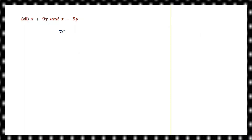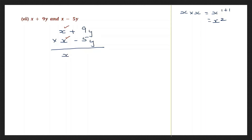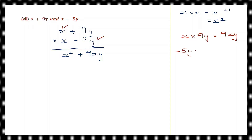Now let's multiply x plus 9y into x minus 5y. First let's take x into x: x into x will be x to the power of 1 plus 1, which is x squared. Let's write x squared here. Now let's multiply x into 9y: x into 9y will be 9xy, so let's write plus 9xy. Now let's multiply minus 5y and x: that's minus 5y into x, which is minus 5 into 1 into y into x — minus into plus is minus — 5 ones are 5xy, so minus 5xy.